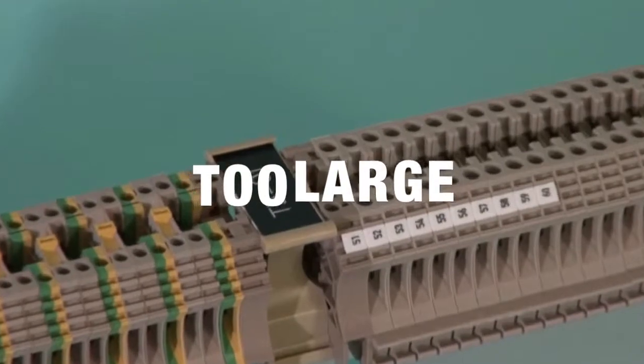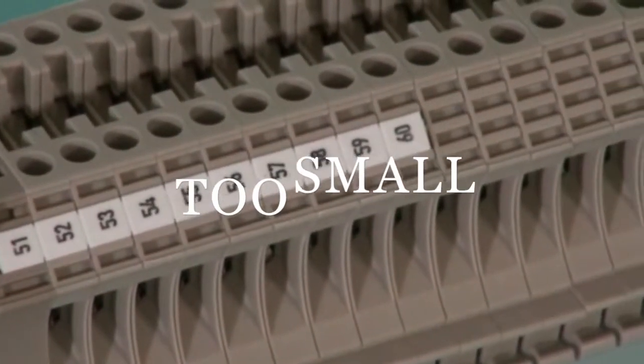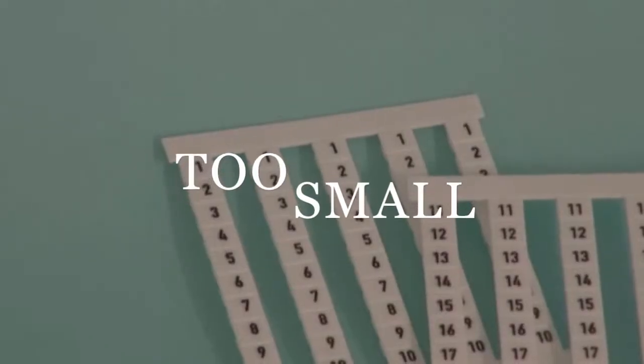A marking tag that is too large for the terminal block will hang over the edge. A tag that is too small may move around and result in a non-uniform appearance.